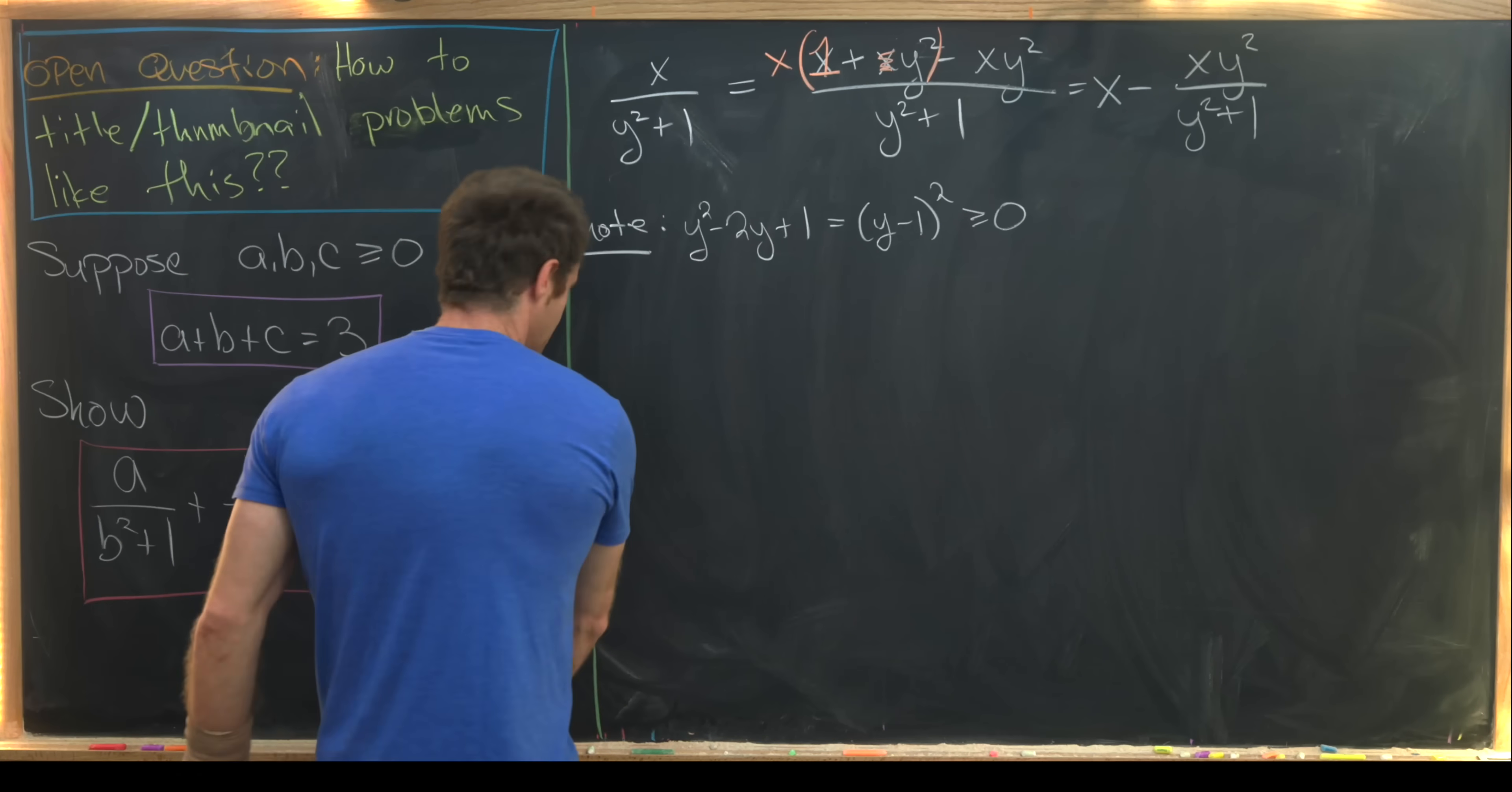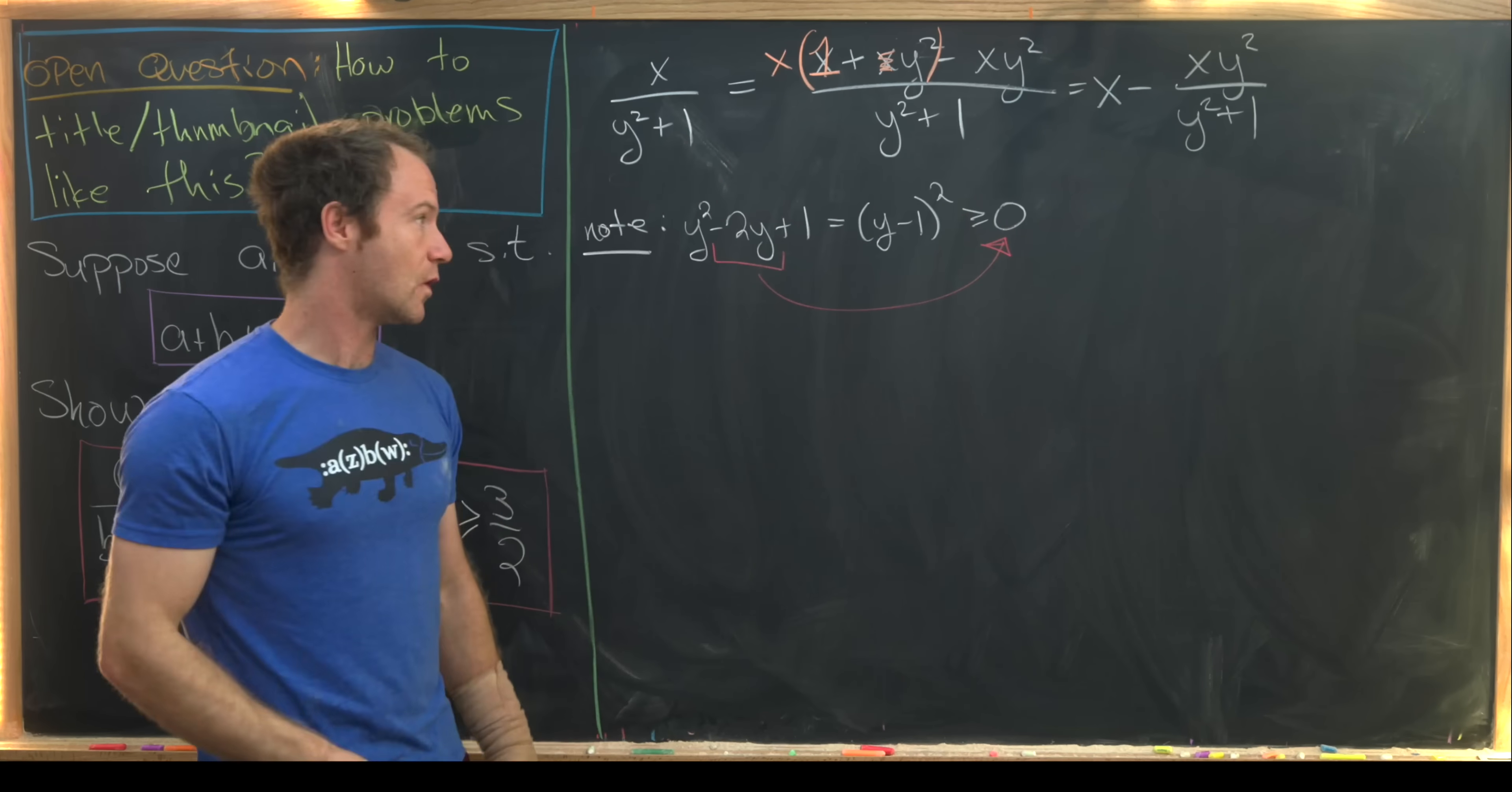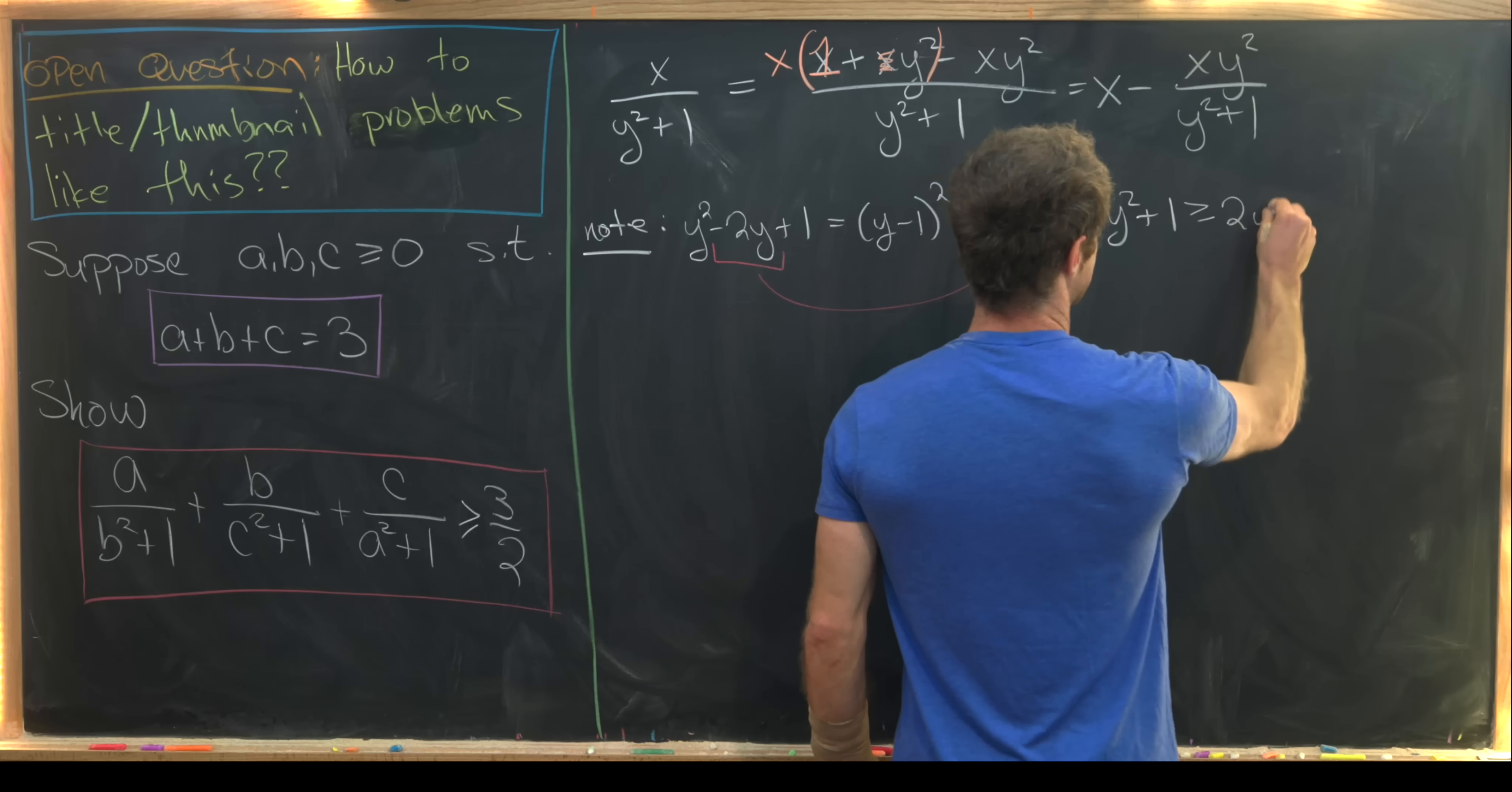Okay, but now we can take this minus 2y and move it to the other side of the inequality, and that leaves us with y squared plus 1 is bigger than or equal to 2y.